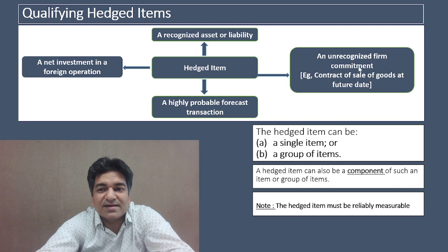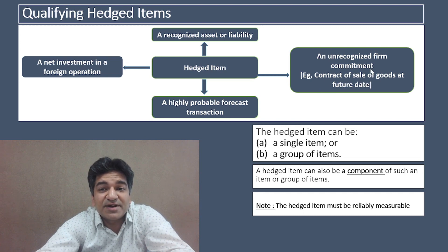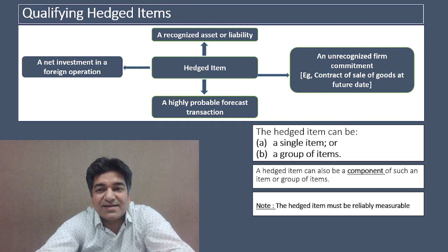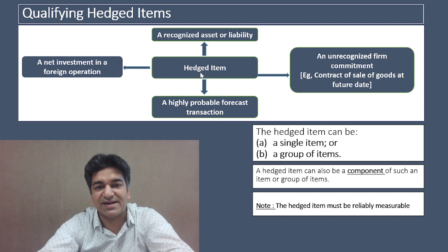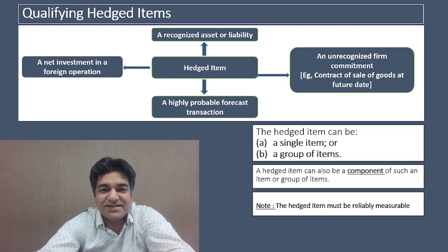Let's say an entity has entered into a contract for the sale of goods at a future date. Because it has already entered into a contract for the sale of goods, it's a firm commitment — the entity is fully committed to do a transaction at a future date. This firm commitment is called an unrecognized firm commitment because it is yet to be recognized in the books of accounts. So an unrecognized firm commitment is an eligible hedged item as per Ind AS 109.